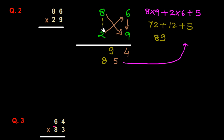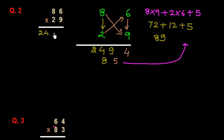Now we multiply the tens-place digits vertically: 8 times 2 is 16, plus carry 8 is 24. So we get 24 here. The product of these two numbers is 2494.